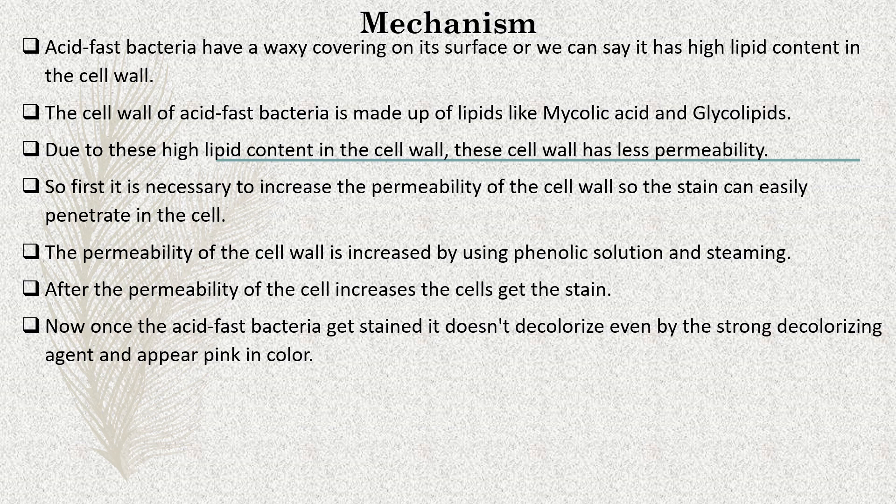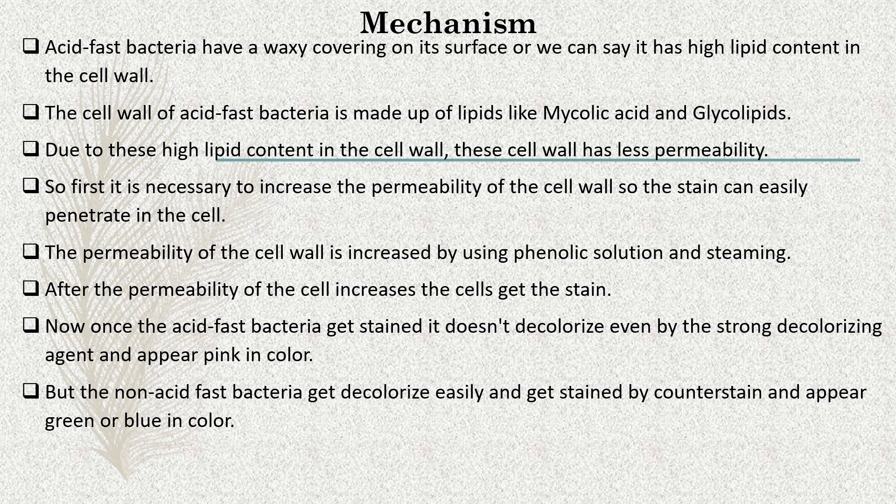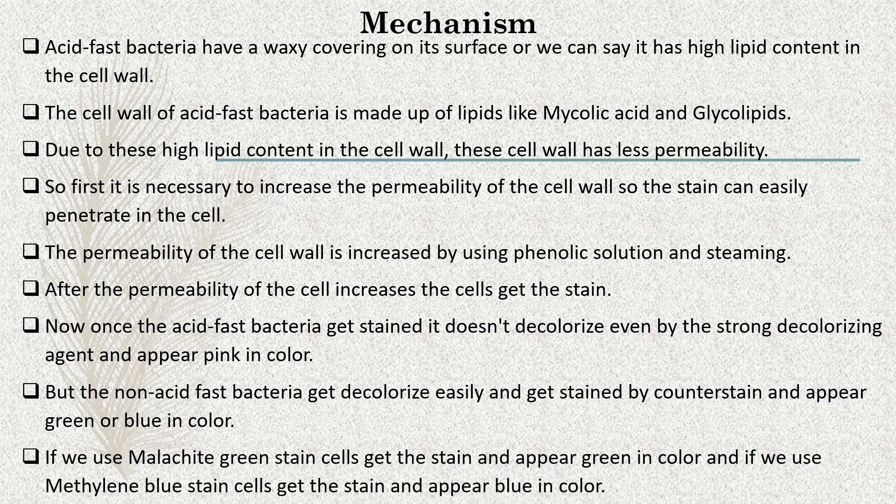There are two types of bacteria distinguished in this procedure: acid-fast and non-acid-fast bacteria. Acid-fast bacteria, once stained by ZNCF stain, don't get decolorized and appear pink in color. Whereas non-acid-fast bacteria get easily decolorized by using a strong decolorizing agent. Once decolorized, they are stained by a counter stain and appear green or blue in color. If we use malachite green, cells appear green; if we use methylene blue, cells appear blue. This was the mechanism of acid-fast staining.